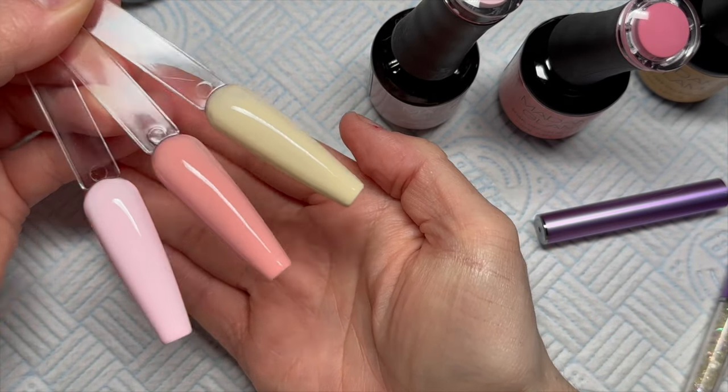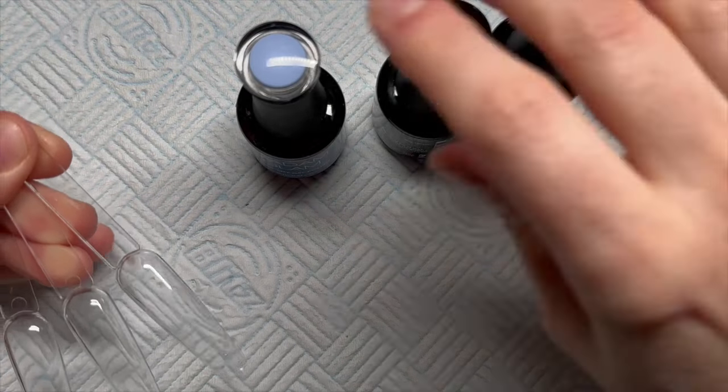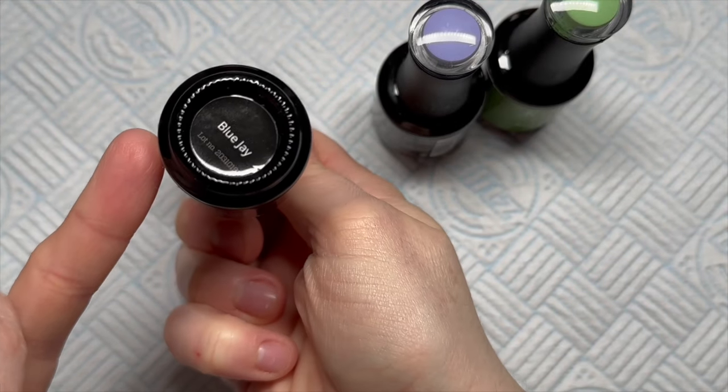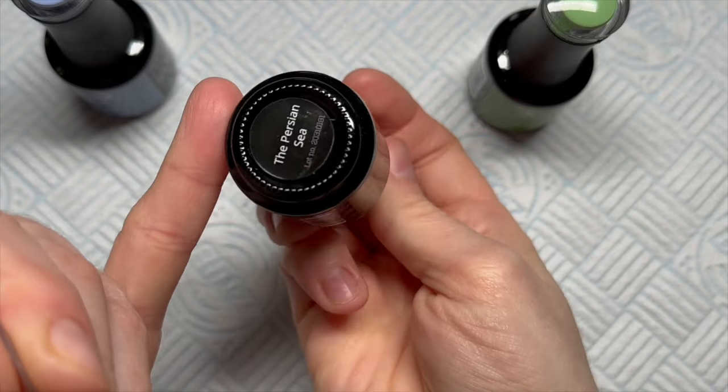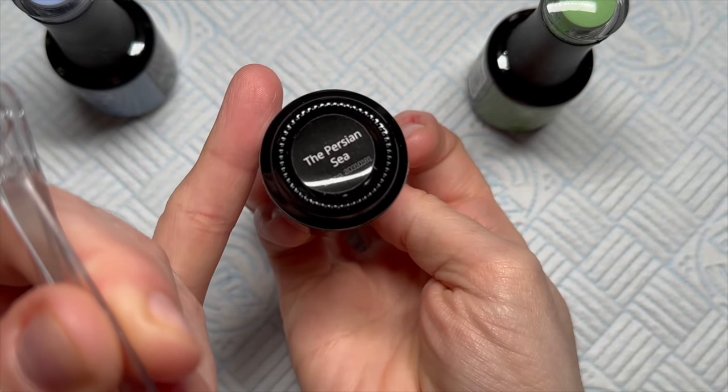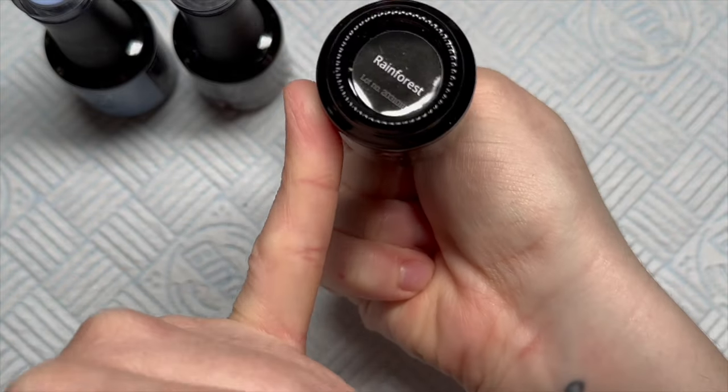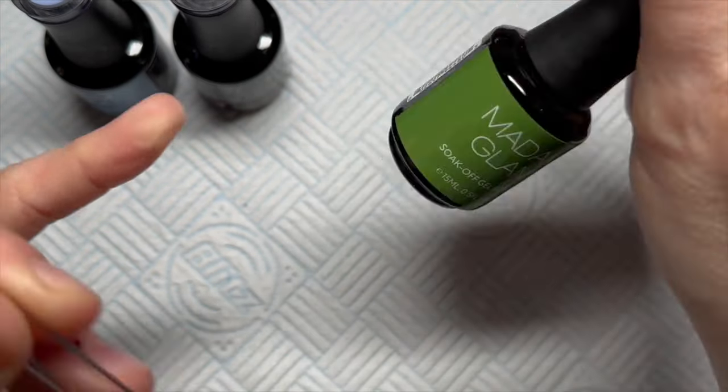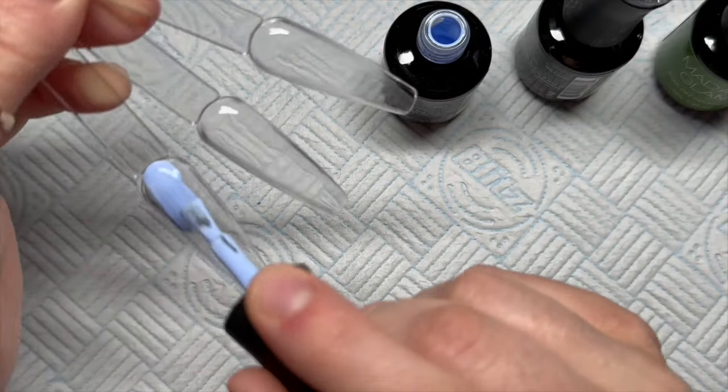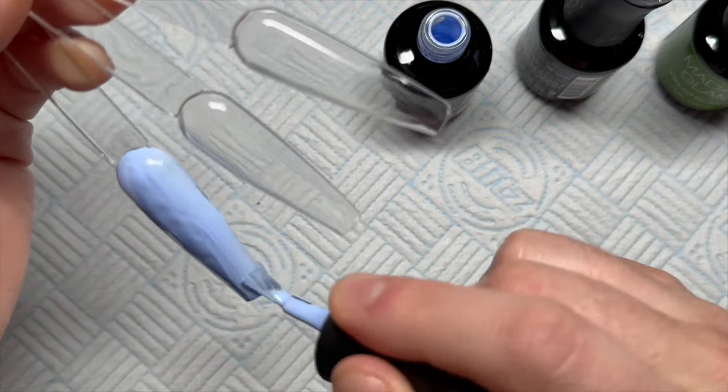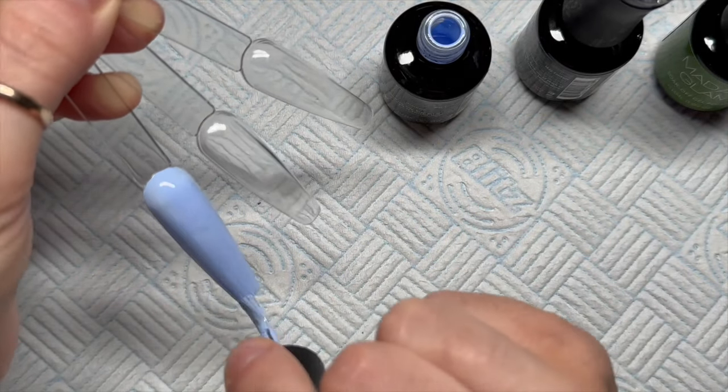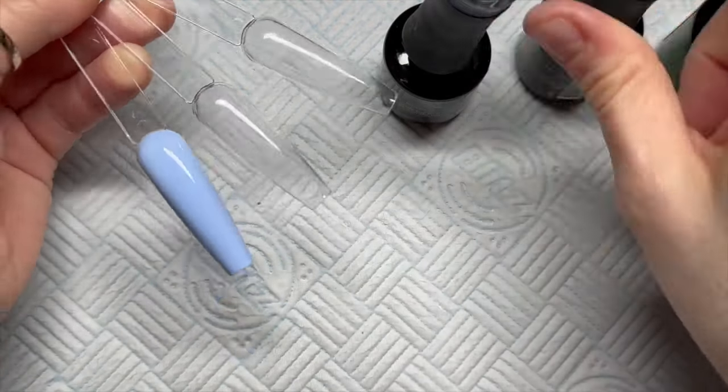They apply so nicely, they're like really nice creamy consistency gel polishes. I love them. And then we've got Blue Jay, The Persian Sea, and Rainforest. So I'm going to do the same thing, I'll show you how they apply, I'm going to speed it up though.